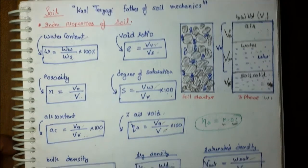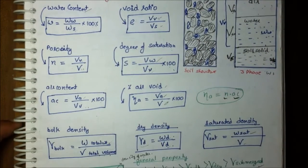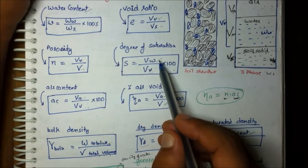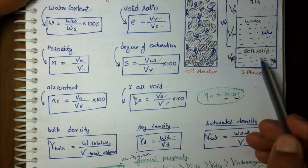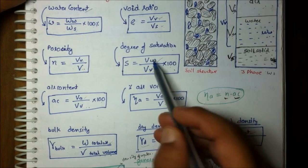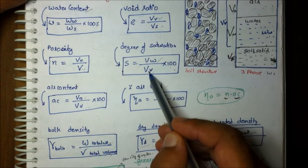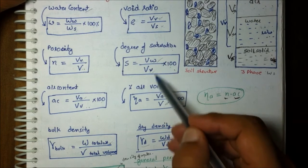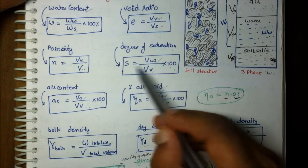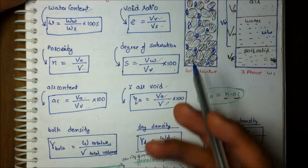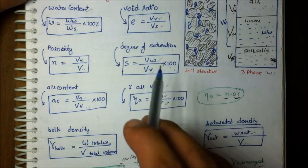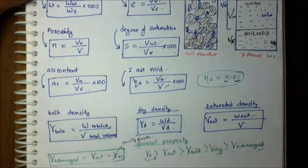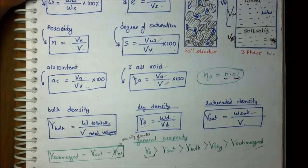Next is degree of saturation. Degree of saturation represents the percentage of water molecules present in the voids. It is calculated as volume of water upon volume of void — essentially measuring how much water the soil contains, or how wet the soil is.